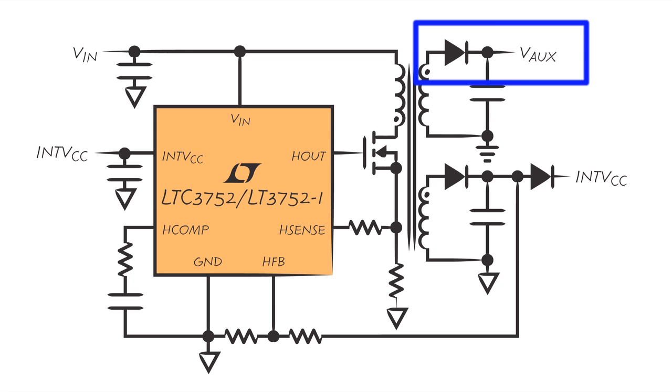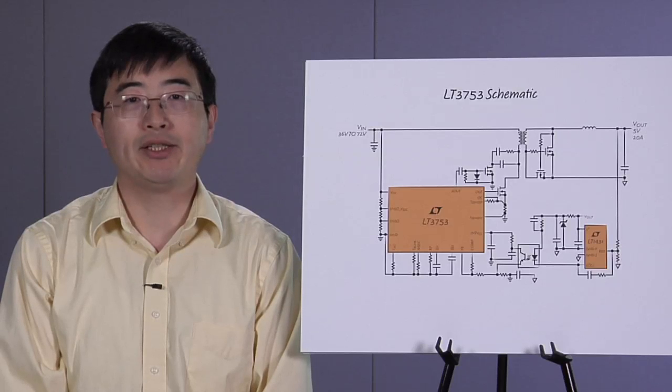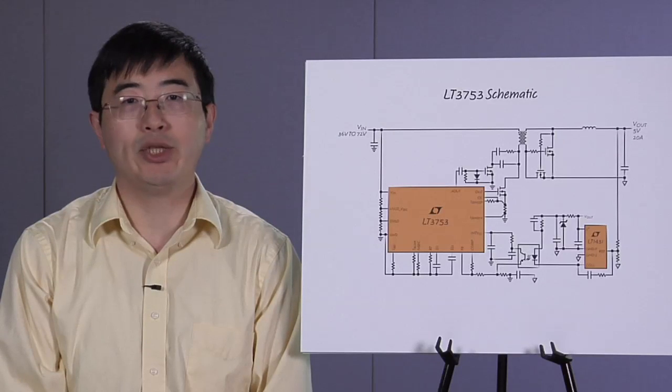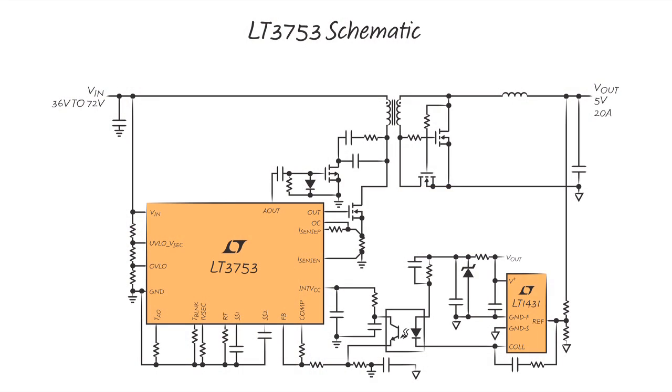This simple schematic shows a 5V 20A output converter that takes a 36 to 72V input. An optocoupler is used to achieve better output voltage regulation.